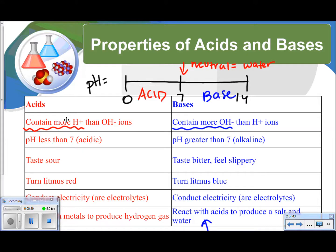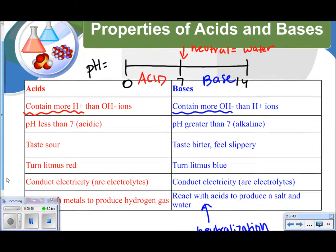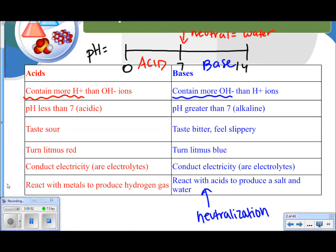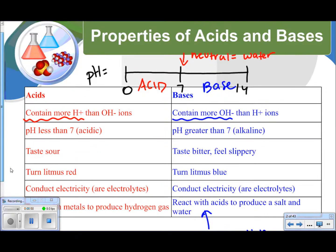Acids contain more hydrogen ions than hydroxide ions. They have a pH of less than 7, and they are acidic. They taste sour. They will turn litmus paper red. They are electrolytes, so they will conduct electricity. They will react with metals to produce hydrogen gas.